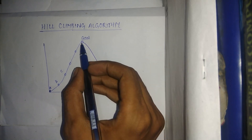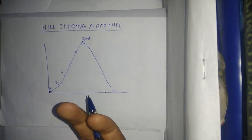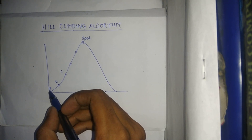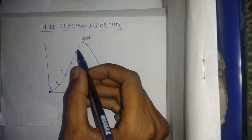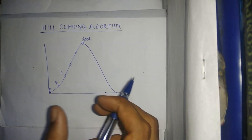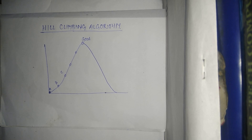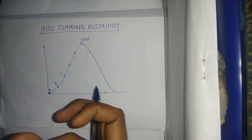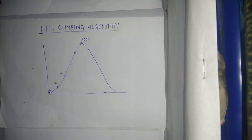Today we are going to have a discussion on the hill climbing algorithm. To understand it, consider a real life example: suppose this is a given hill and we have to climb it. Our initial position is A and our goal position is the top. When climbing, we start from the bottom and take step by step in the direction up towards the top. Similarly, in the hill climbing algorithm, we have operators — the nodes or points like A, B, C, D — and we slowly and steadily climb towards the top.